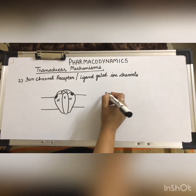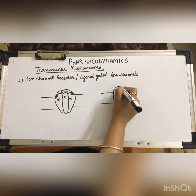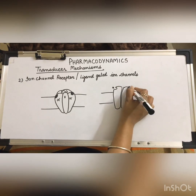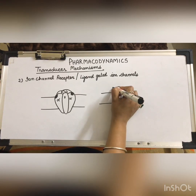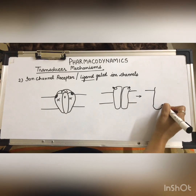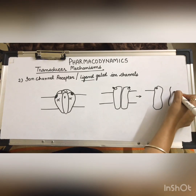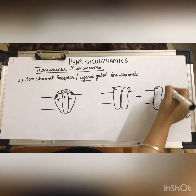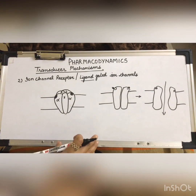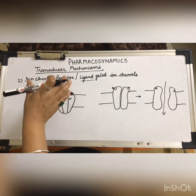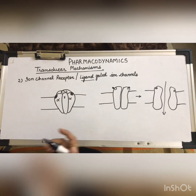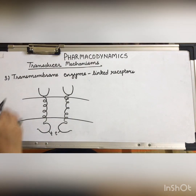Every channel is specific for its particular ion — for example, sodium, potassium, chloride, or calcium. In the resting state the channel is closed. When the agonist binds, ligand binding leads to the opening of the ion channel and allows passage of the specific ion. Opening and closing depends only on ligand binding, with no involvement of coupling proteins or second messengers. Therefore, this is the fastest mechanism for drug action, acting in milliseconds.